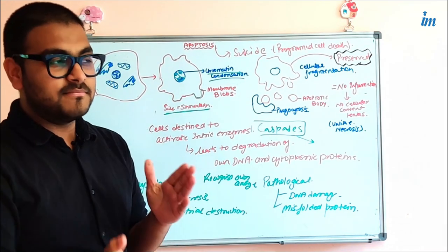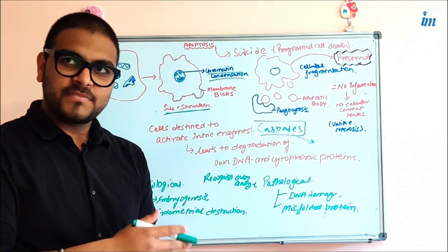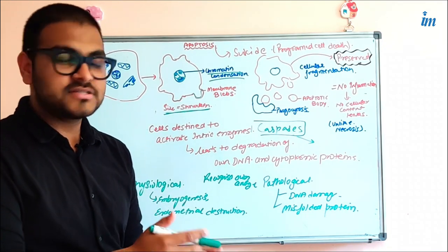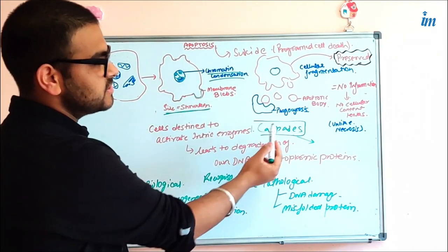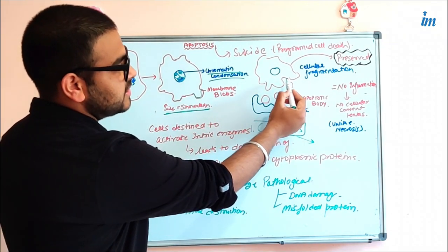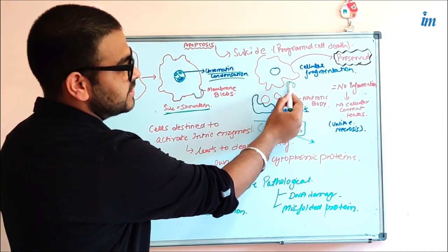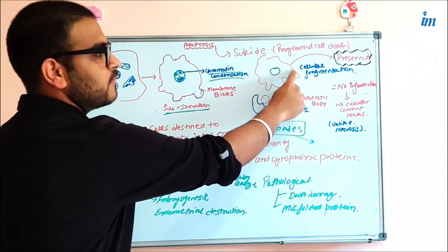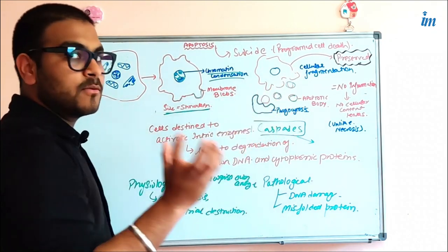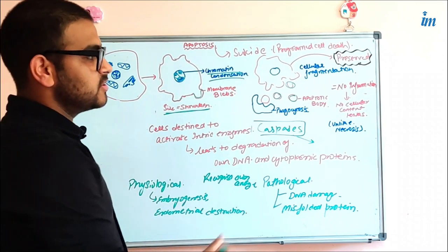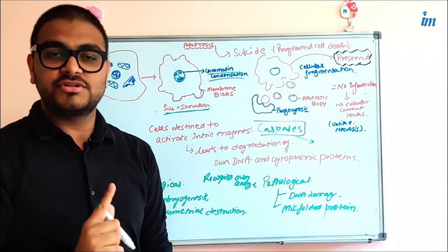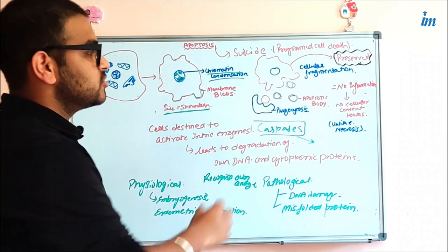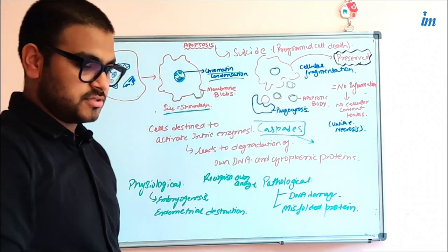What most importantly differentiates apoptosis from necrosis is the formation of apoptotic bodies — these are the chopped-off parts of cells with intact membranes. In apoptosis, there is no destruction of the cell membrane. The membrane is preserved throughout the apoptosis process.